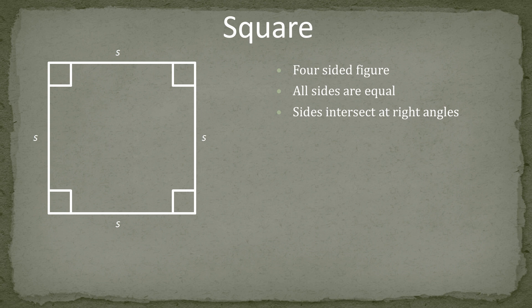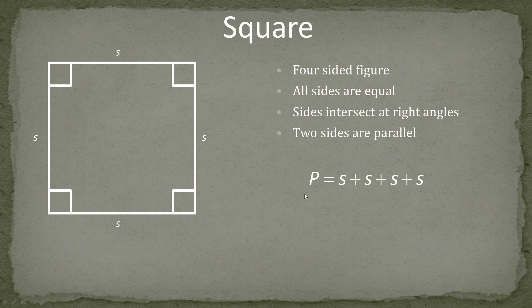For now we're going to stick with the square — they have four right angles, and two of the sides are parallel. This side is parallel to this side, and this side is parallel to this side. To find the perimeter, we just add up the sides: S plus S plus S plus S. When we combine like terms, there are four S's, so we can also write the perimeter as 4 times S.